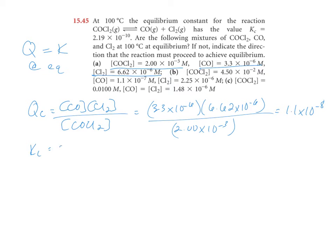So for this particular problem, if my k sub c was 2.19 times 10 to negative 10, and I just found my q sub c, which is 1.1 times 10 to negative 8, they are not equal. My q sub c is larger. Since my q sub c is larger, I'm going to need to get it down. This value has to come down to this value to achieve equilibrium.